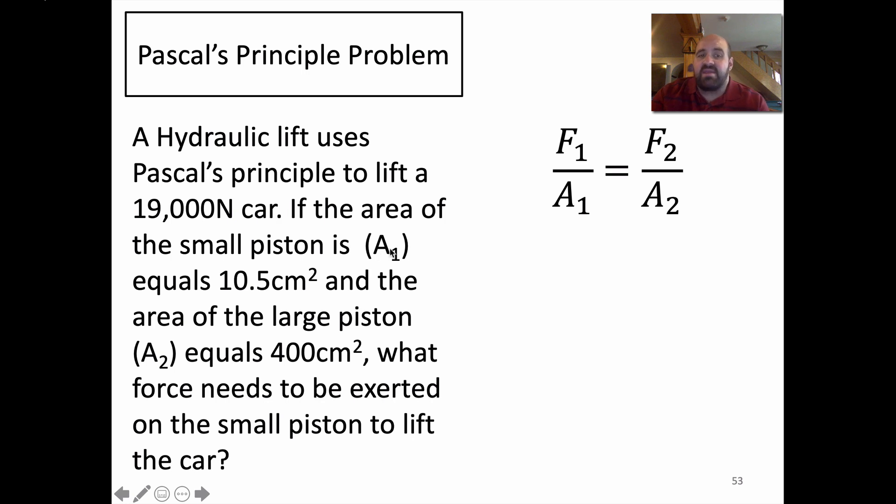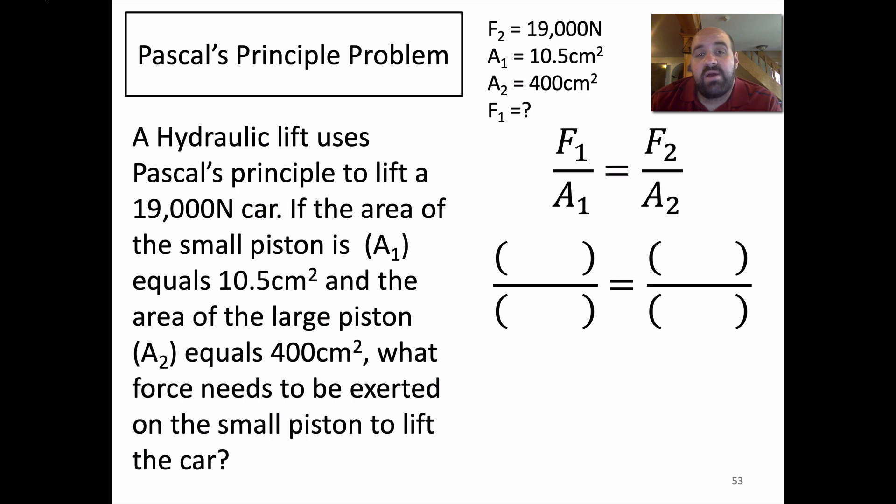They tell us directly area 1. They tell us the area of the large piston, the area of the small piston. They also tell us the force. A hydraulic lift uses Pascal's principle to lift a 19,000 Newton car. You're lifting a 19,000 Newton car. So, your output force has to be 19,000 Newtons. So, basically, you list all your variables. F₂ is 19,000. A₁ and A₂ are given to you directly. And all you got to do is plug these variables in right where they go in the formula.